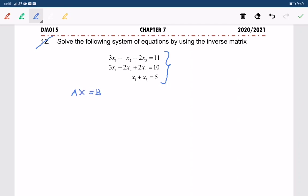So we will take out all the coefficients of x1, x2, and x3. So A is a matrix of 3, 1, 2. How did I get 3, 1, and 2 is by referring to the coefficient of x1, x2, and x3. For the second row, we have 3, 2, and 2. And the last row, 1, 0, and 1.